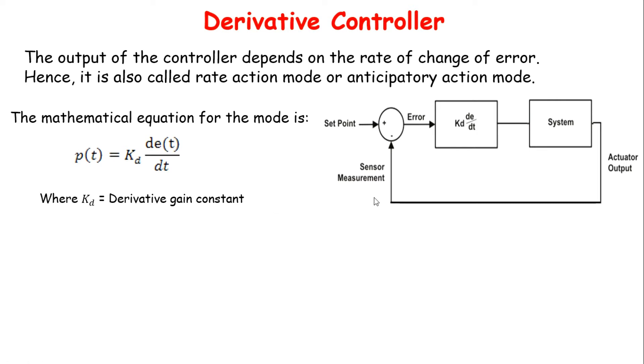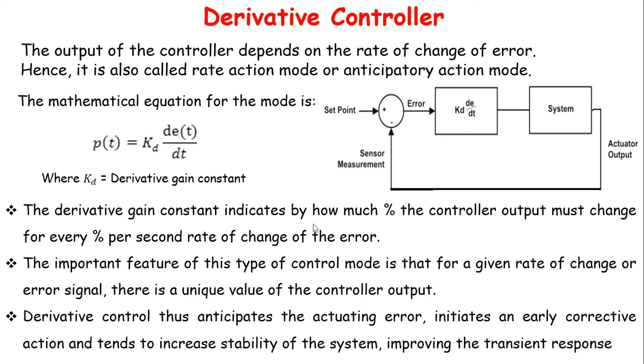Derivative action is not used alone because it provides no output when error is constant. The derivative gain constant indicates by how much percent the controller output must change for every percent per second rate of change of error. Generally kd is expressed in minutes.